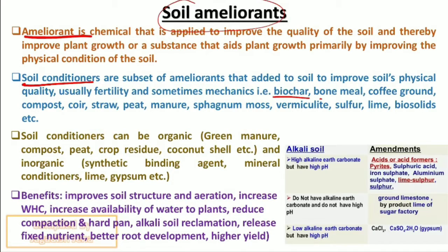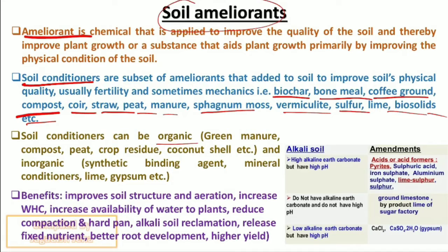More examples include peat, manure, sphagnum moss, vermiculite, sulfur, lime, and bio-slurry. Soil conditioners can be organic — like green manure, compost, feed crop residue, coconut shell — or inorganic, like synthetic binding agents, mineral conditioners, lime, and gypsum.